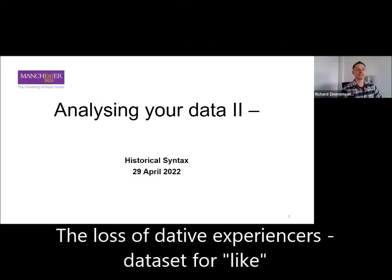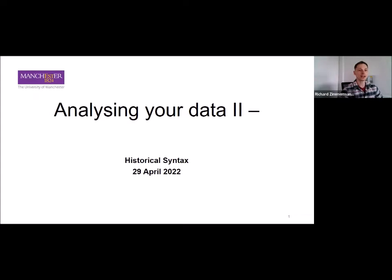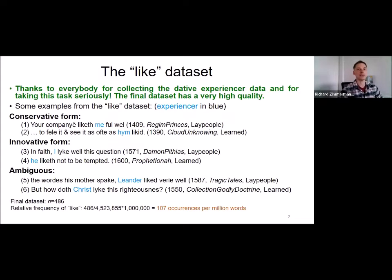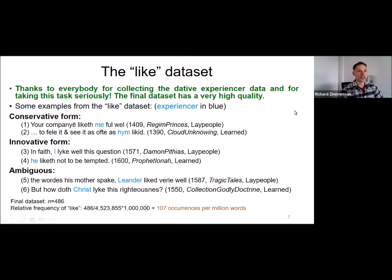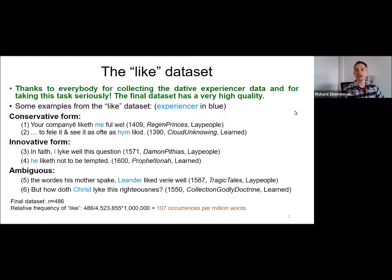Hello everybody. This is the second tutorial on analyzing data on syntactic changes using the technique of logistic regression. Today is the day that we finally reap the fruit of our hard labor, because for the last few weeks we have been collecting data on the loss of dative experiencers in the history of English from about 1370 to 1600 in a corpus of about 4.5 million words. The final data set is very, very good — I would even say it is probably the best data set that has ever been collected on this change.